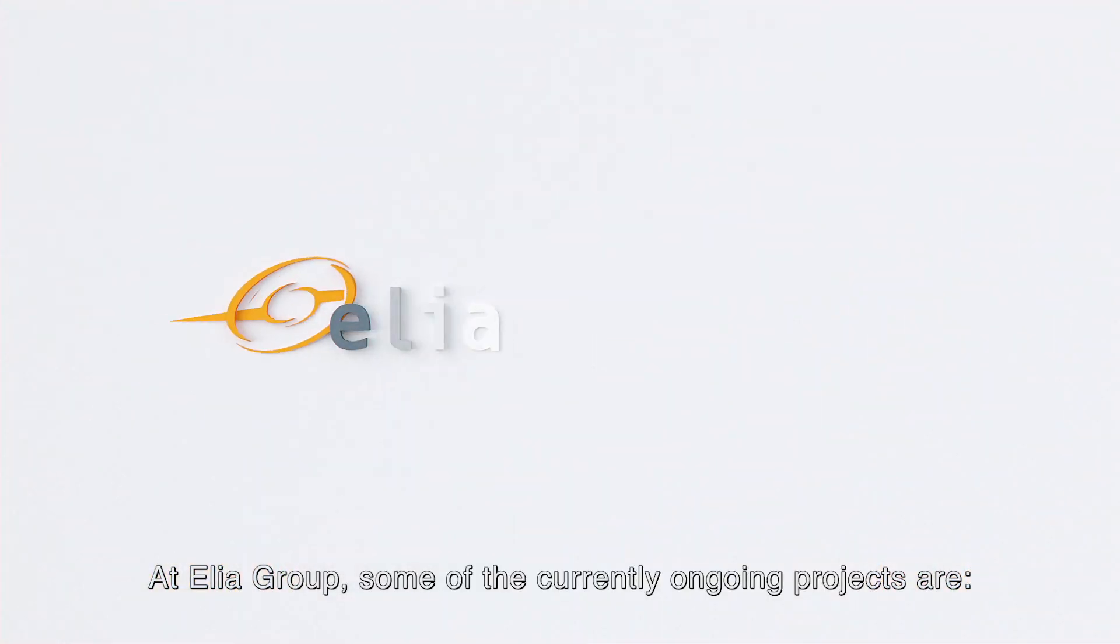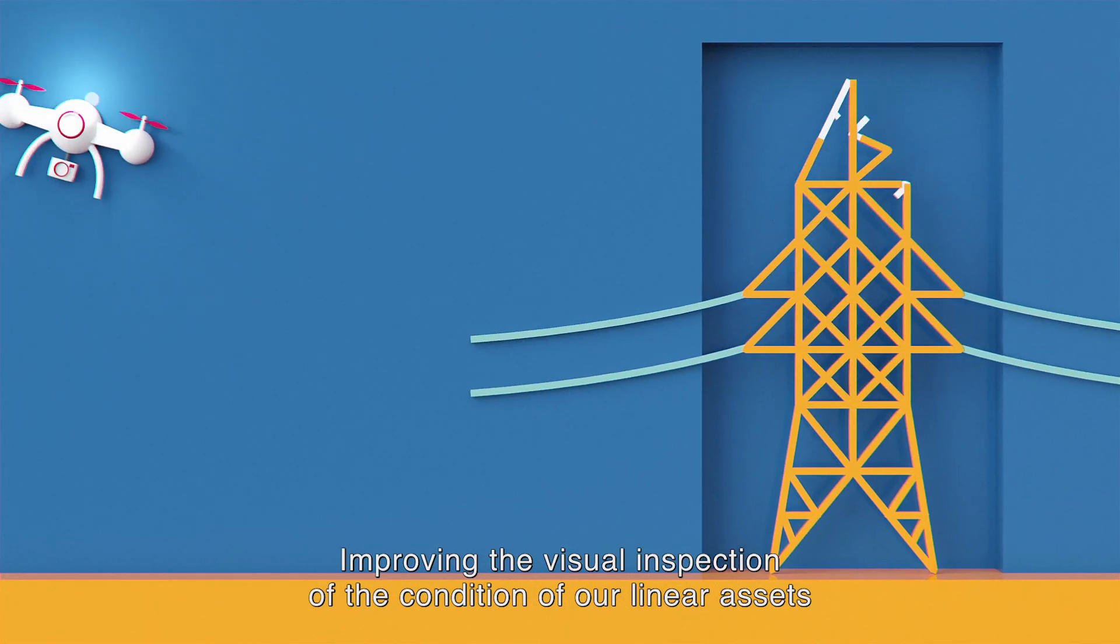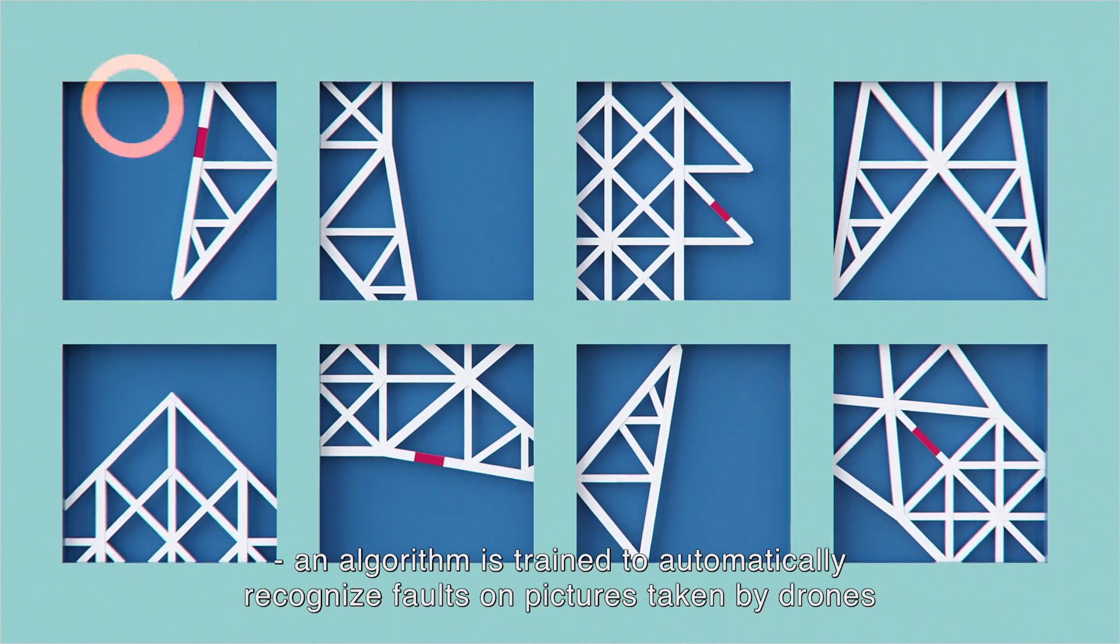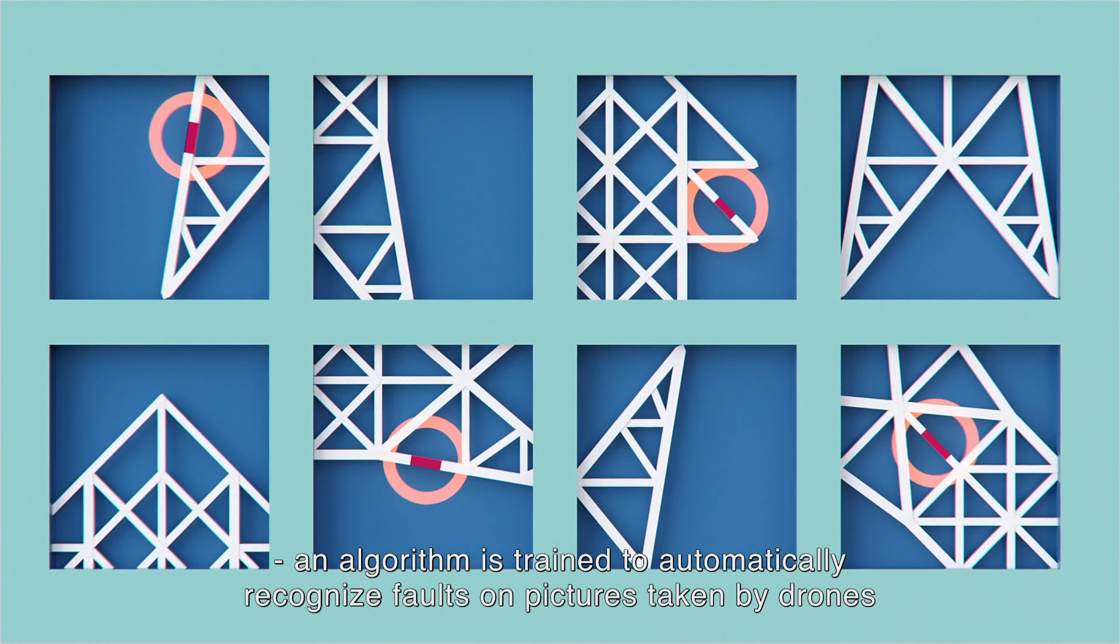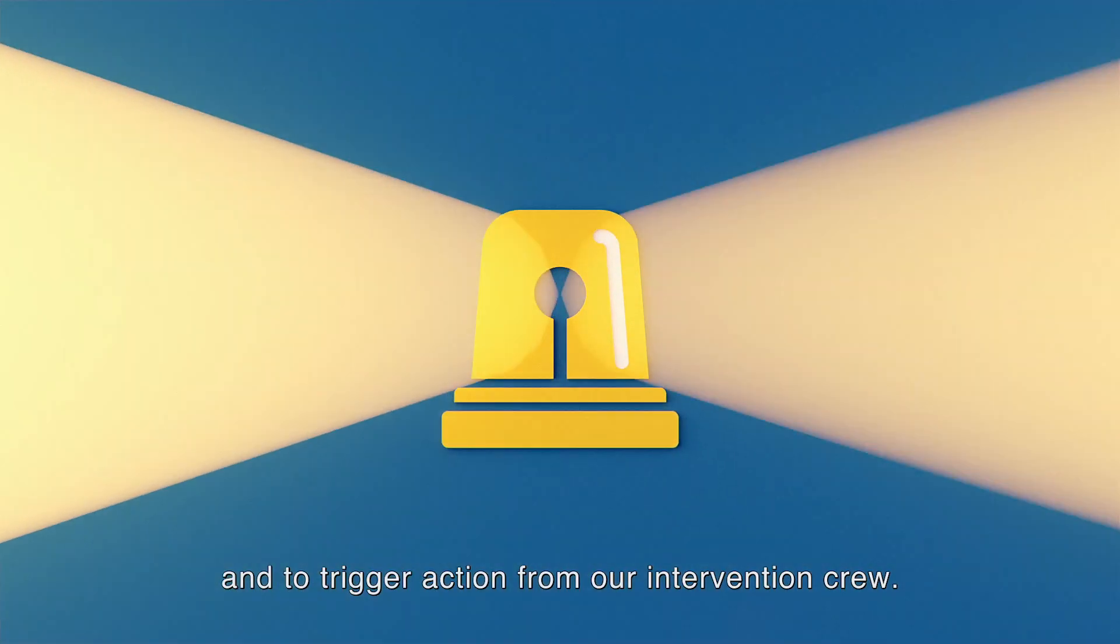At ILEA Group, some of the currently ongoing projects are improving the visual inspection of the condition of our linear assets. An algorithm is trained to automatically recognise faults on pictures taken by drones and to trigger action from our intervention crew.